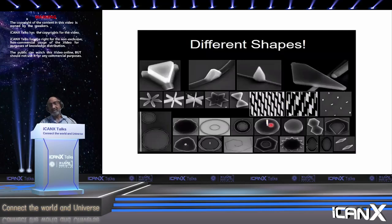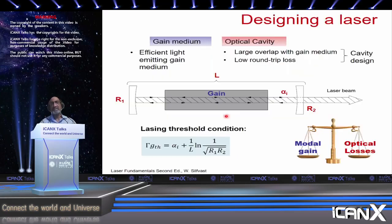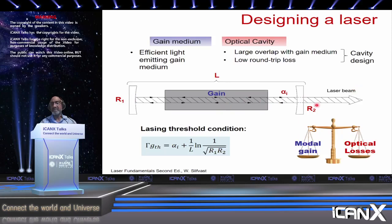We've been working on a wide variety of nanostructure shapes — depending on your application, you can choose the particular type of device you want. Now let me speak about devices. Lasers — all of us have studied in undergraduate optics courses: you need a laser cavity, a gain medium, and mirrors. This mirror has high reflectivity and this mirror has low reflectivity. Light bounces back and forth as you pump the gain medium. Once the modal gain exceeds the optical losses in the cavity, lasing starts — that's the population inversion threshold condition.